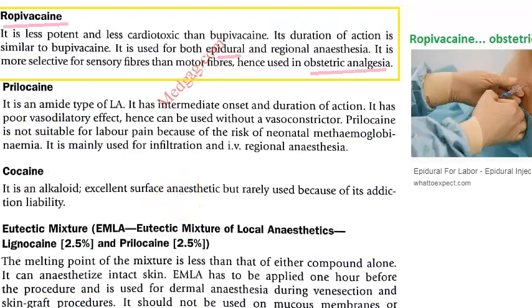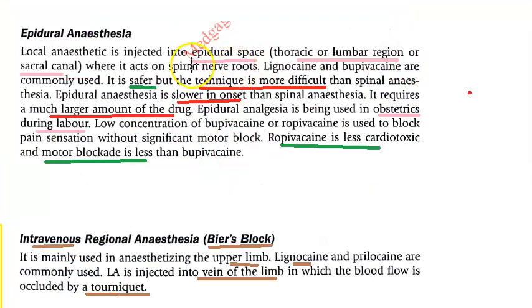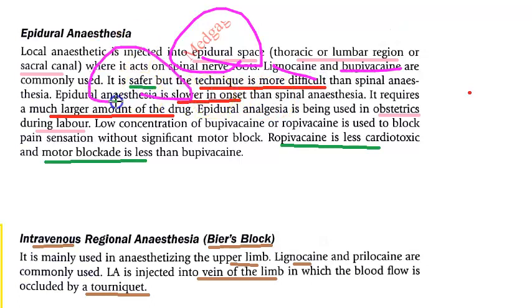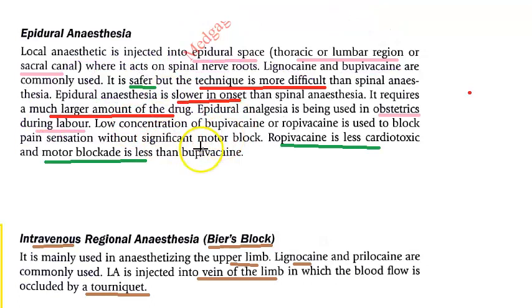For epidural anesthesia, drugs like ropivacaine and bupivacaine are injected into the epidural space — commonly used for obstetric analgesia. It is safer but the technique is more difficult, slower in onset, and requires larger drug amounts.